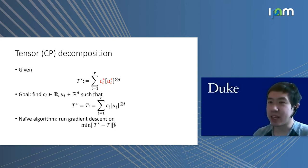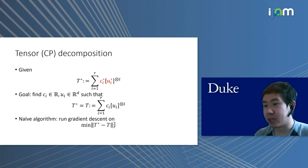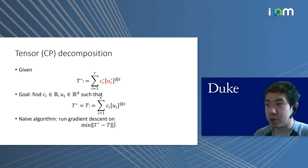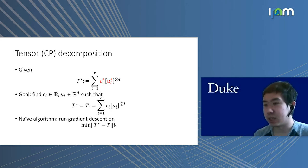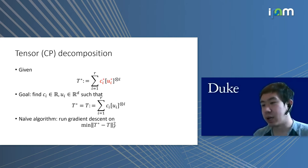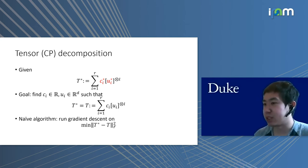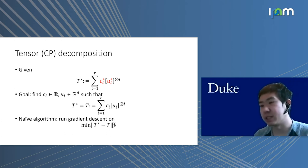There are many algorithms for tensor CP decomposition, but in this talk we are going to focus on a very naive algorithm. We are just going to run gradient descent on the simple objective that tries to minimize the Frobenius norm difference between T-star and T, where T has the CP decomposition form: summation of c_i times u_i tensor to the L. We want to run gradient descent on the parameters c_i and u_i.